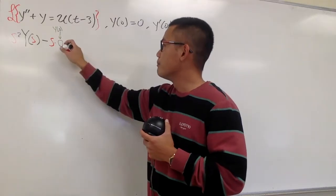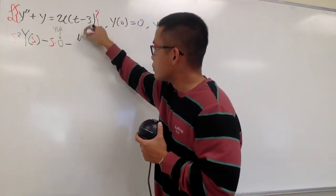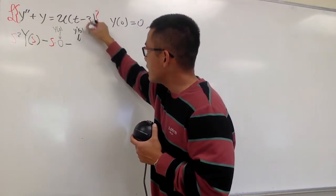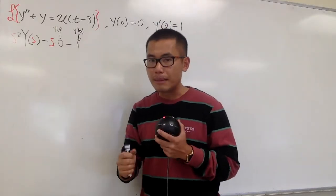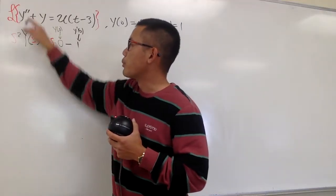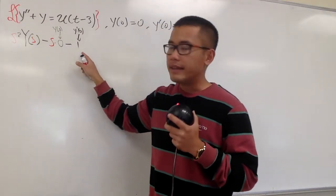And then we are going to minus Y prime of 0. So let me just indicate that. And we know Y prime of 0 is equal to 1. So, this is what we have after we do the Laplace transform of Y double prime.